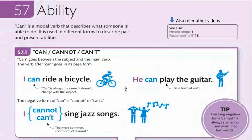The negative form of 'can' is 'cannot' or 'can't.' For example: 'I cannot sing jazz songs' or 'I can't sing jazz songs.' The more common short form is 'can't.' The long negative form 'cannot' is always spelled as one word, not two words. 'Can't' is used in spoken English, while 'cannot' is used in written, academic, or formal English.